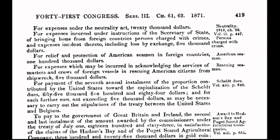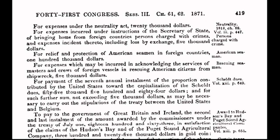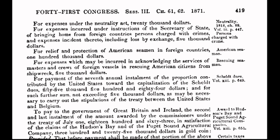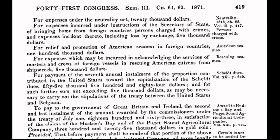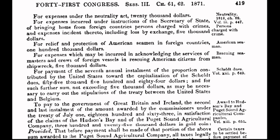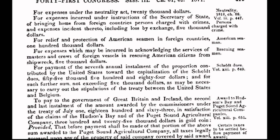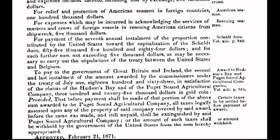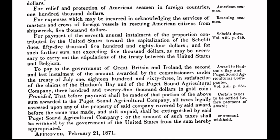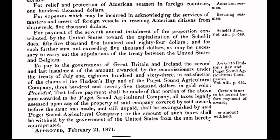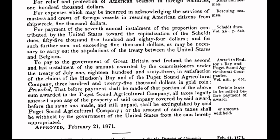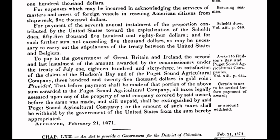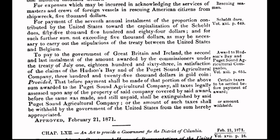In today's program, I will put the spotlight on an act that was enacted in the year of 1871 on February 21st. Congress passes an act to provide a government for the District of Columbia, also known as the Act of 1871. When you fully understand the ramifications of the past, you will then fully understand the ramifications of the present, and you will know how to change the future. And here is where our story begins.